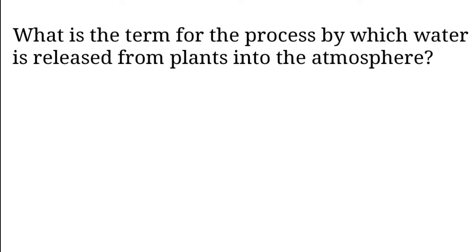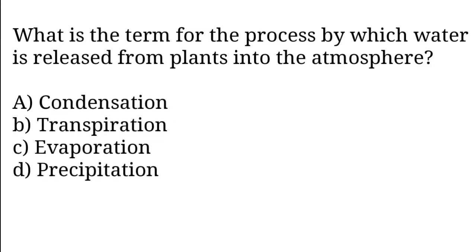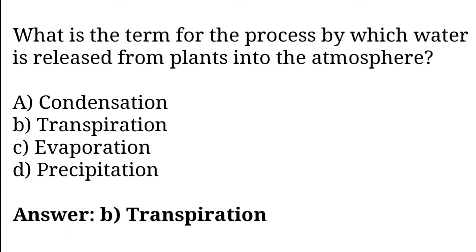What is the term for the process by which water is released from plants into the atmosphere? Options: Condensation, transpiration, evaporation, precipitation. So the correct answer is option B. Transpiration is the term for the process by which water is released from plants into the atmosphere.